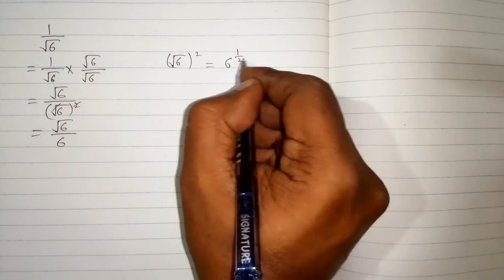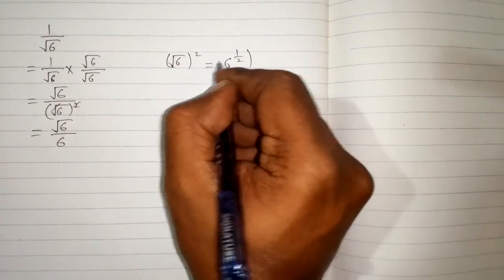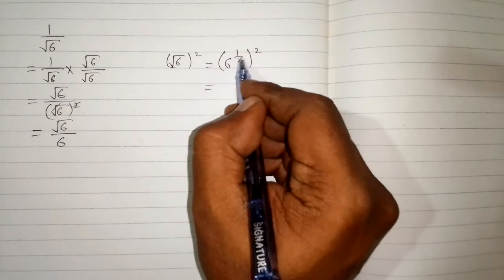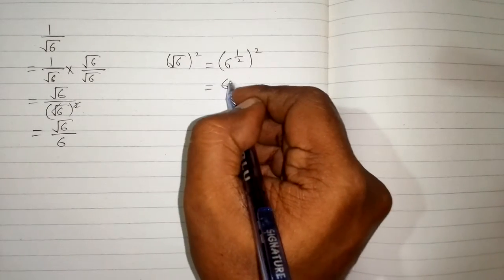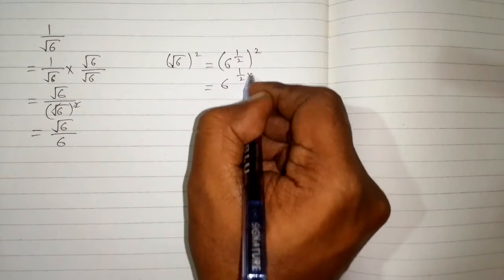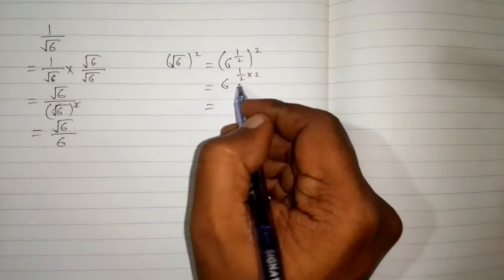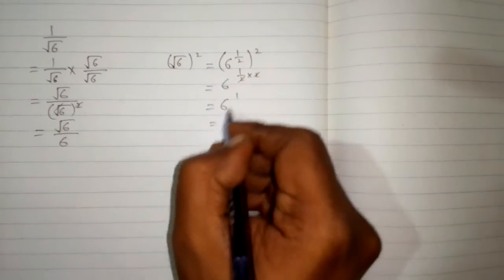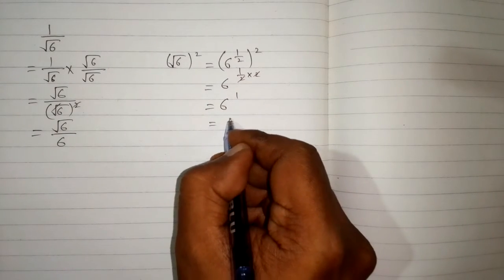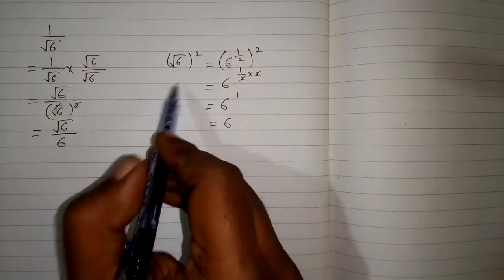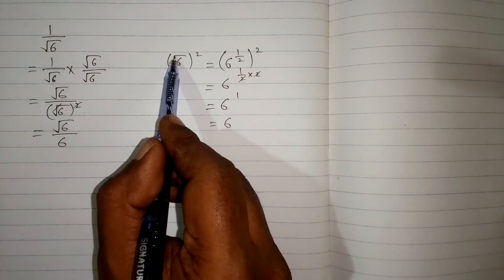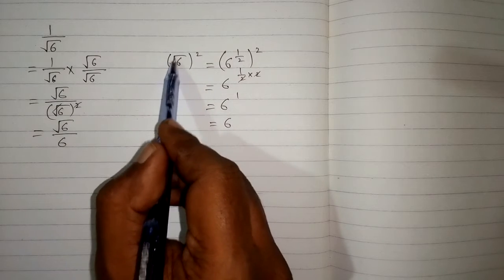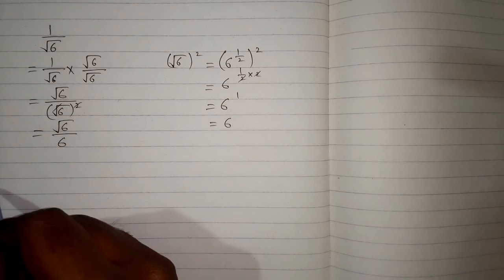Because square root means the power is 1 upon 2, and the whole power is 2. By the rule of indices we can multiply these powers, so we have 6 raised to the power 1 upon 2 multiplied by 2. We can cancel the 2 and 2, giving 6 raised to the power 1, which equals 6. That is why we can cancel the square root and square, because the square of square root of 6 is equal to 6.